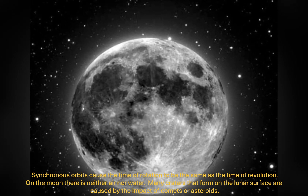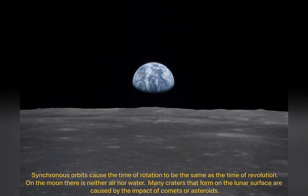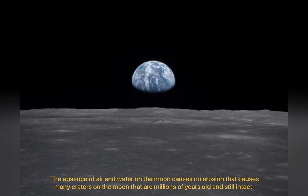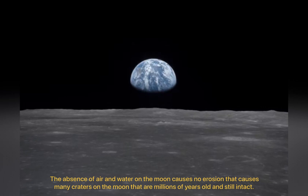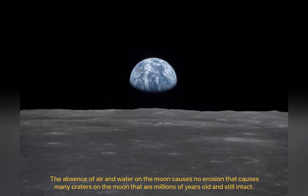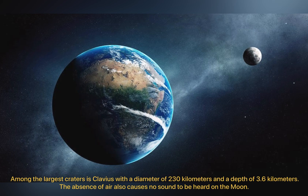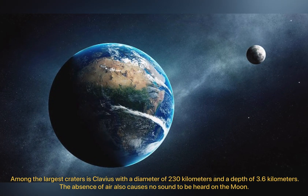On the Moon there is neither air nor water. Many craters that form on the lunar surface are caused by the impact of comets or asteroids. The absence of air and water on the Moon causes no erosion, which means many craters on the Moon are millions of years old and still intact. Among the largest craters is Clavius with a diameter of 230 km and a depth of 3.6 km.